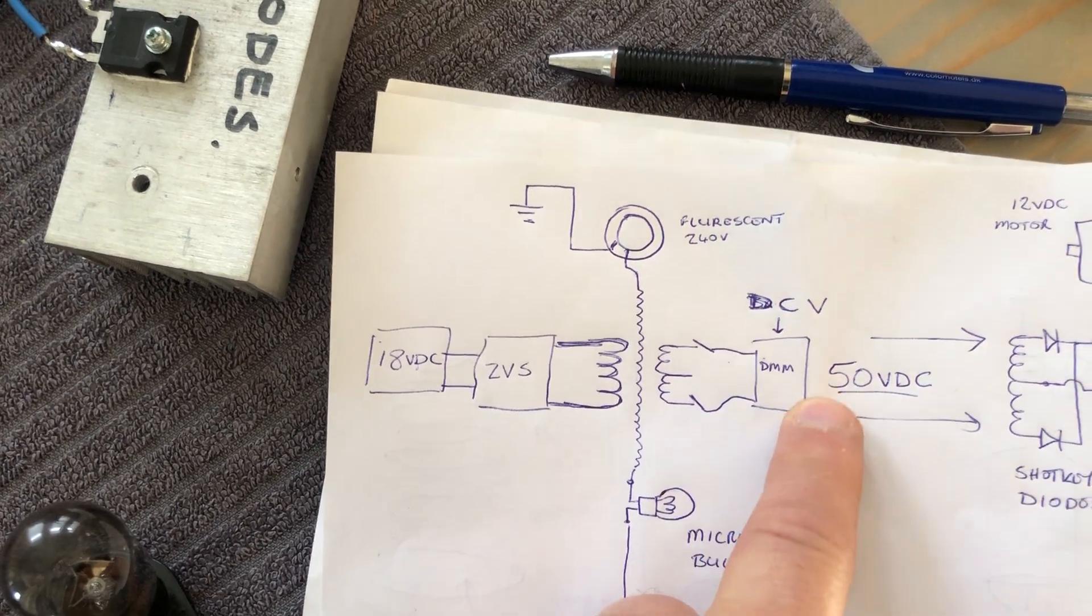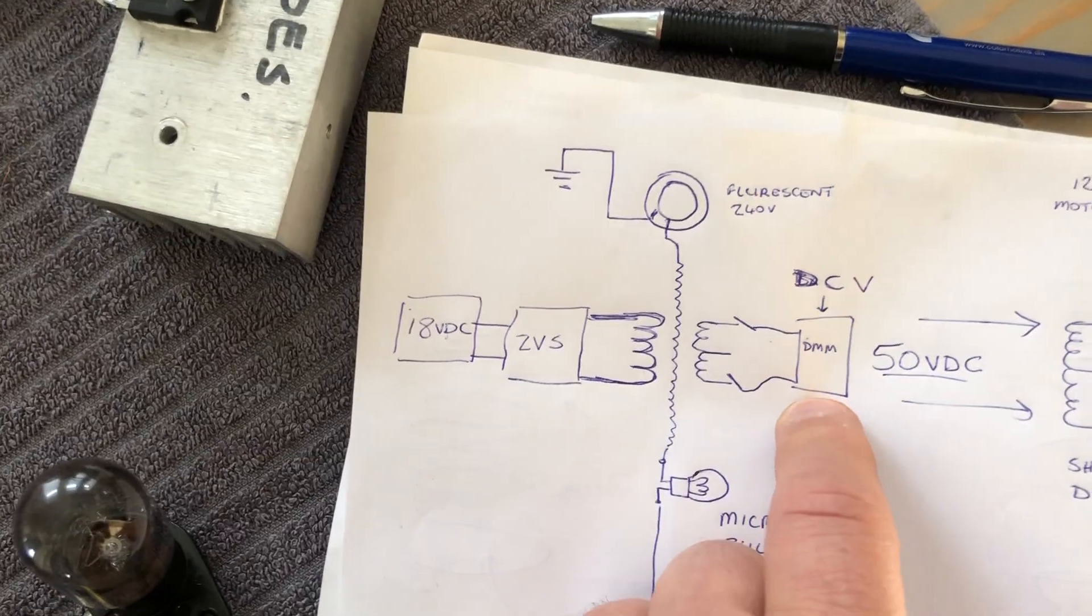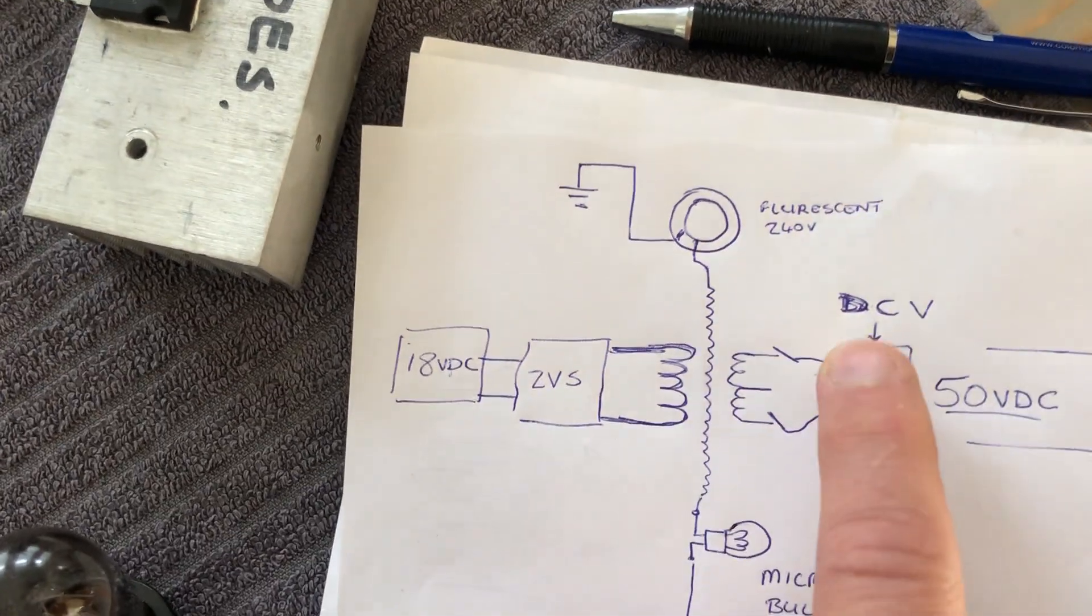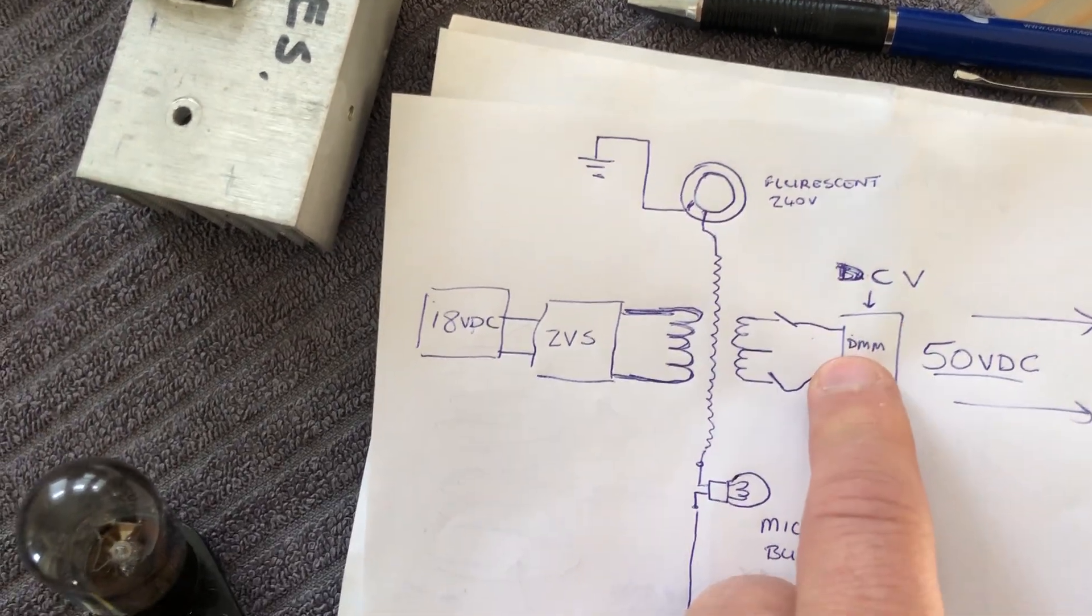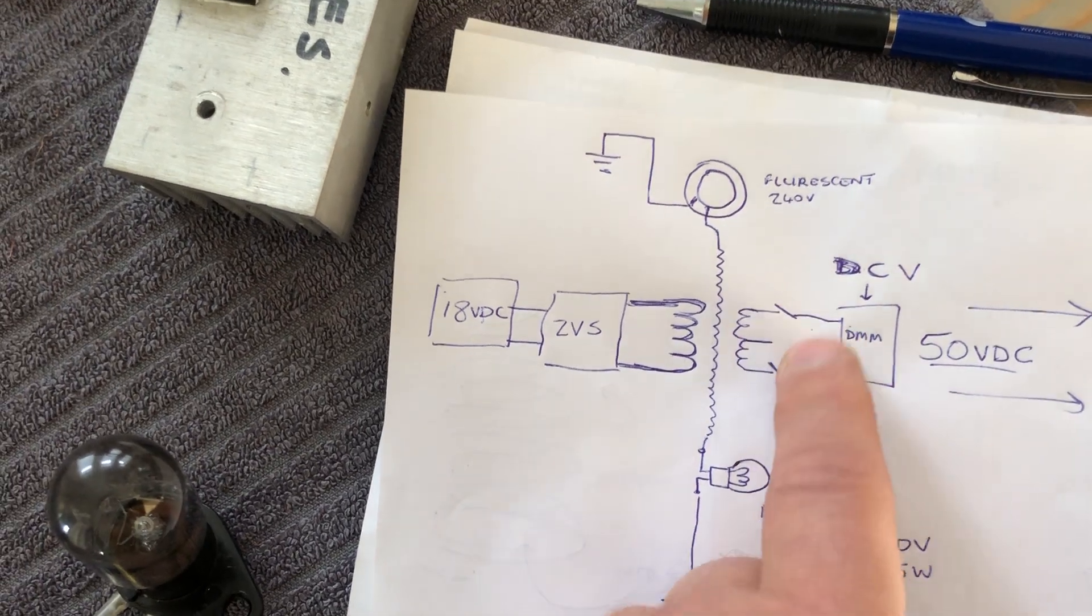So, in the previous video, I showed a multimeter, and it is showing 50 volts DC on the output of this.